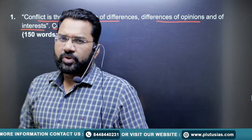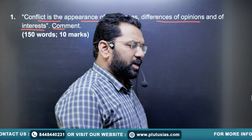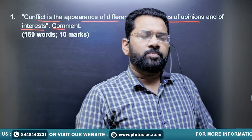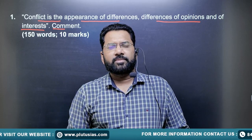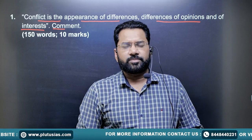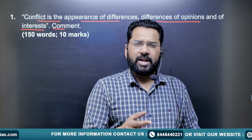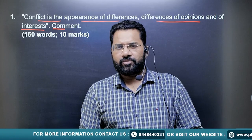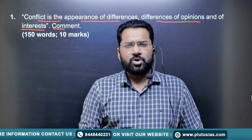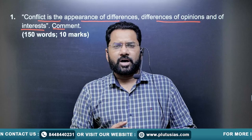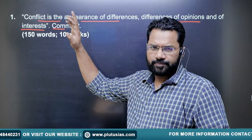For example, we can talk about issues related to any issue, for that matter. Let's say we are talking about the UCC — the Uniform Civil Code. Some particular people will have different kinds of views, and other sets of people will have different kinds of views. Because of that, a conflict of interest arises.